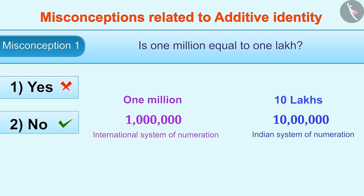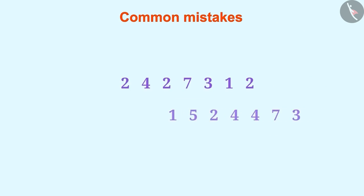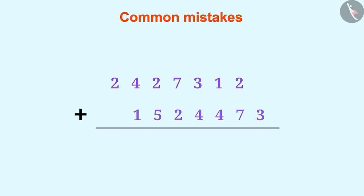In the same way, let's now see some common mistakes. While adding or subtracting two numbers, they are often not written at appropriate places. This makes the solution incorrect.